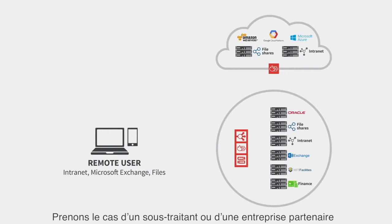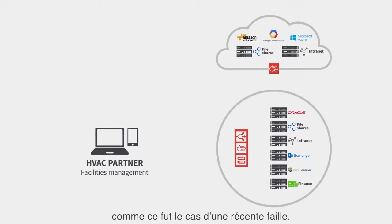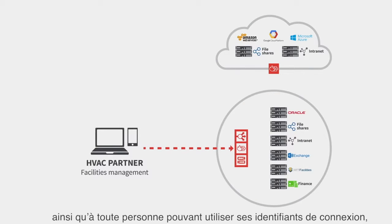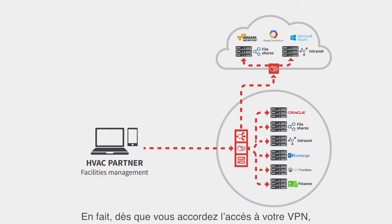Say you have a contractor or a business partner that needs to get to a single application to do their job — for example, a heating and air conditioning vendor, as we saw in a recent breach. Once you give that user VPN access, you've just given them, and anyone else that can get to their credentials, access to your entire network. The fact is, every time you provision VPN access, you're actually extending your network perimeter.